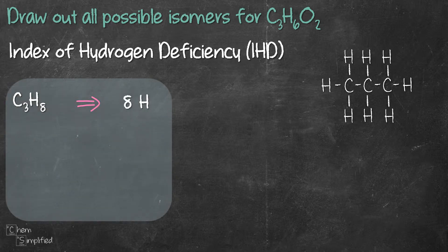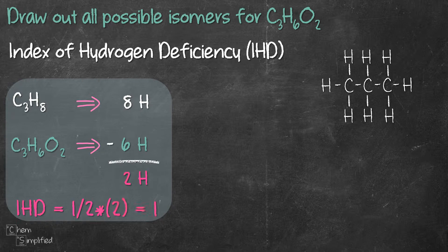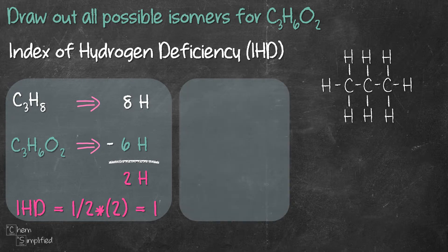Propane C3H8 has 8 hydrogens, whereas our formula C3H6O2 has 6 hydrogens. When calculating IHD we ignore the oxygen, so what we do is just subtract the hydrogens, and that gives us 2 hydrogen. IHD will be half of that number, meaning 1 over 2 times 2, and that gives us 1. So what does this 1 mean?